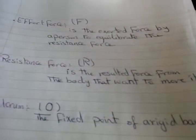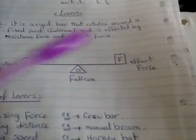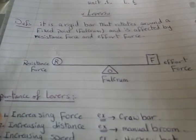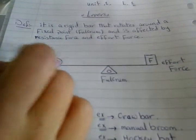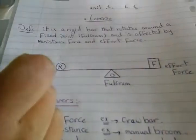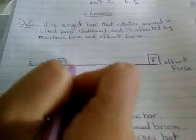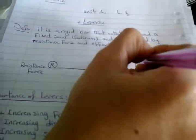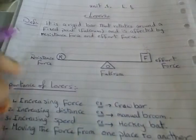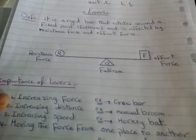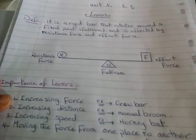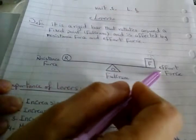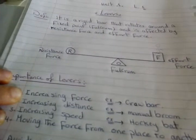Let's make it more obvious. Imagine a seesaw — a person standing here makes a weight, which is the resistance force. We try to balance it or make equilibrium by exerting an effort force. Another person tries to make a balance with the first person's weight. So a lever is a bar that rotates around a fixed point — the fulcrum — affected by resistance force and effort force.